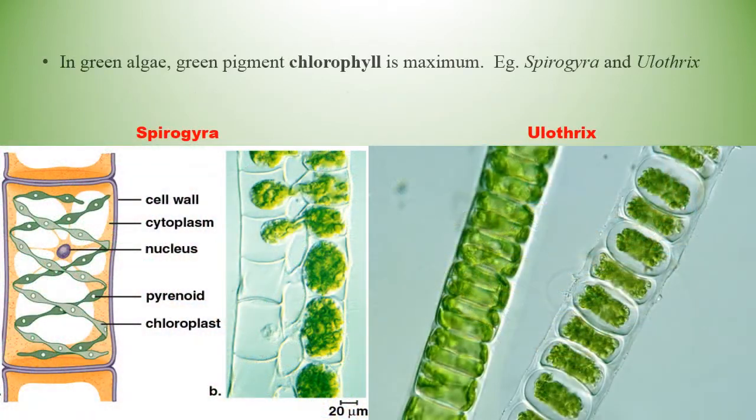In green algae, the green pigment chlorophyll is maximum. Examples include Spirogyra and Ulothrix.